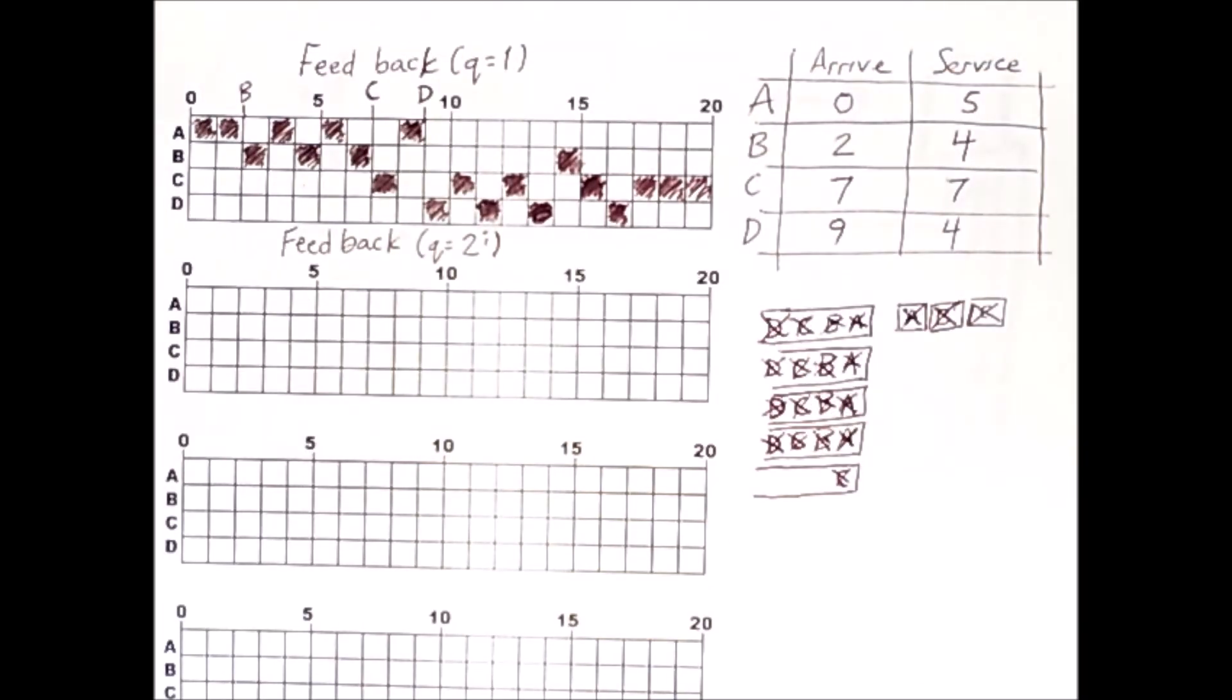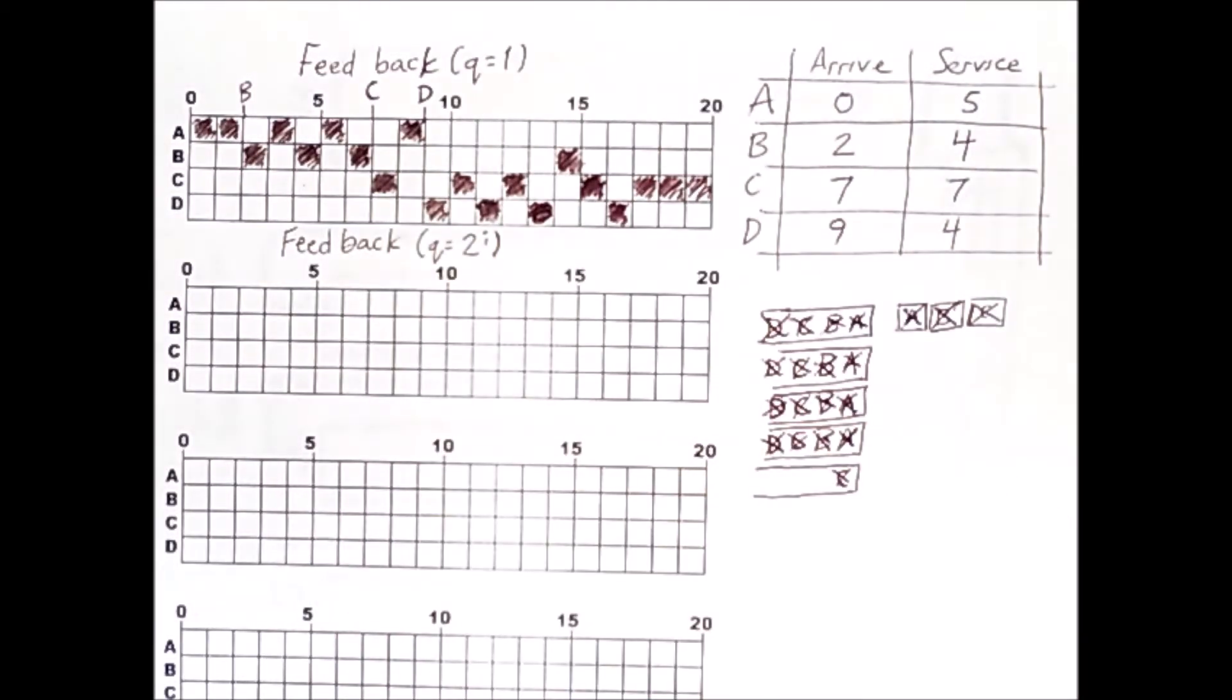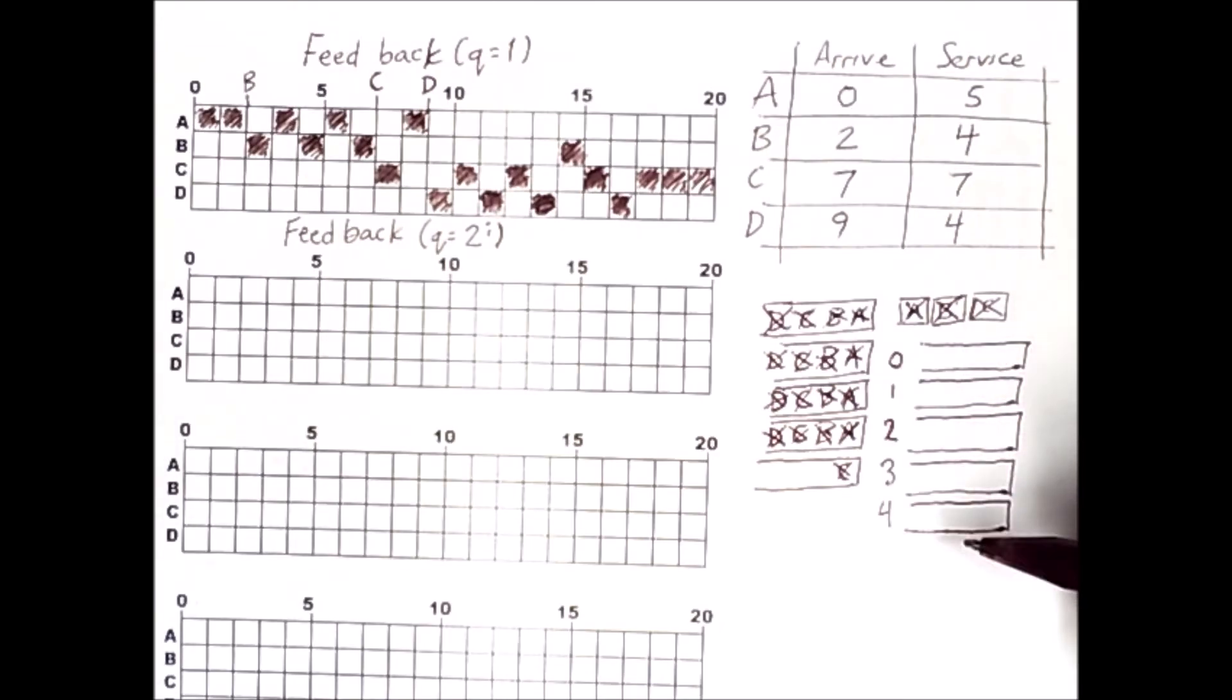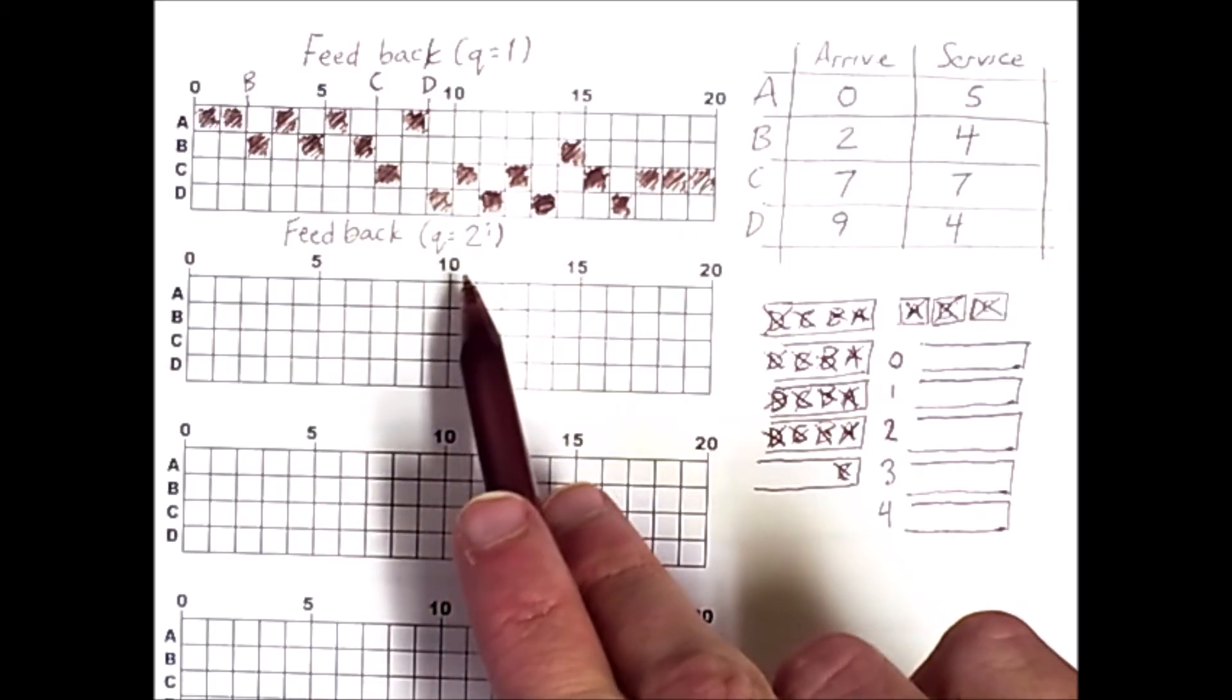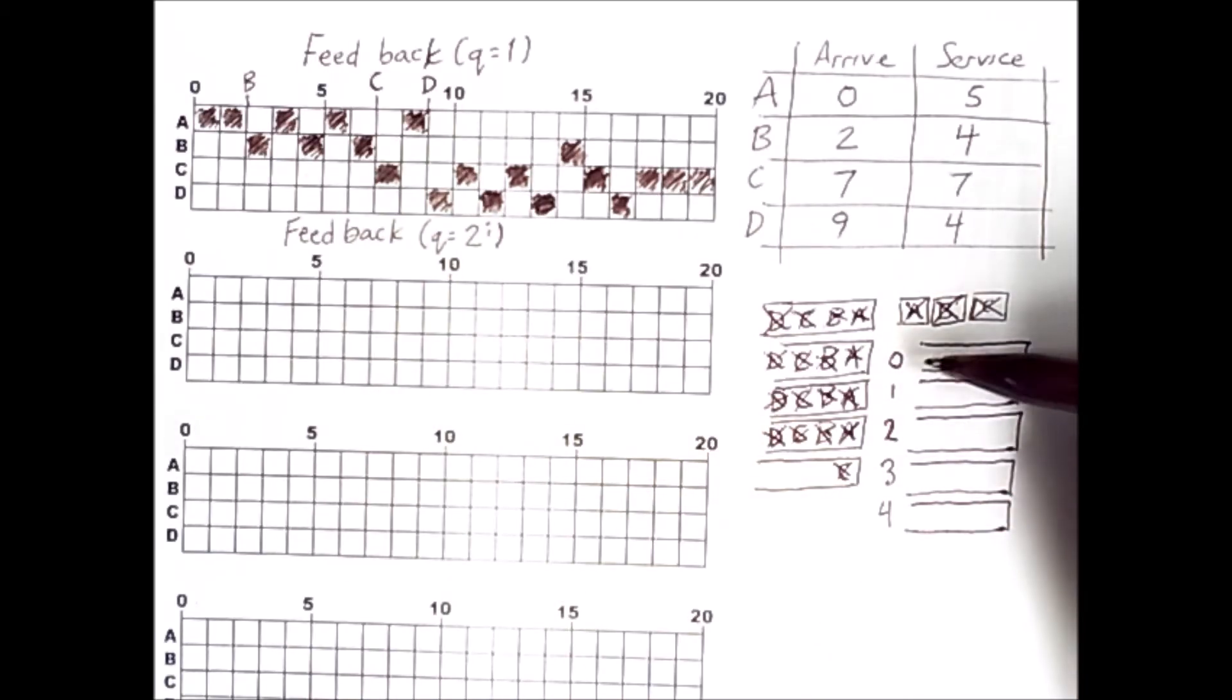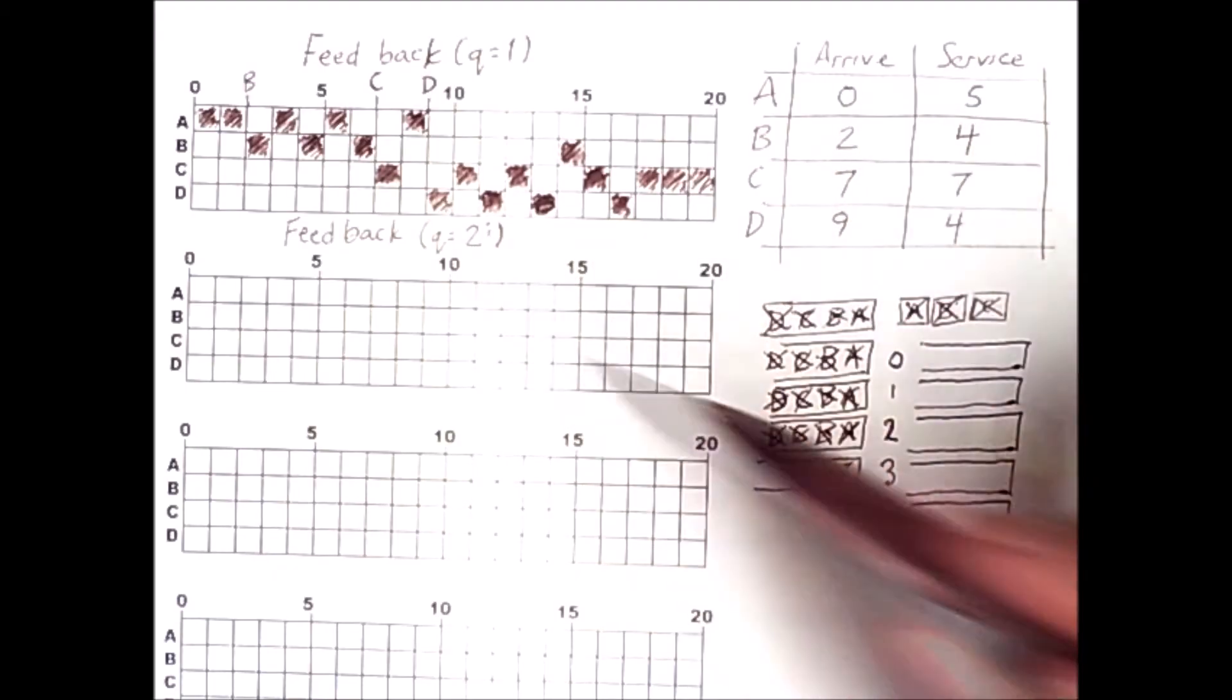Now, you could do the same thing with a quantum of 2 or more. Just keep in mind that it's fixed. Now, this is in contrast to feedback with a quantum of 2 to the i, where the amount of time you get to run depends on which queue you're coming from. So that looks like this. On the side here, I've laid out all of the ready queues for doing feedback with queue 2 to the i in advance. So these numbers are the values of i depicted in that quantum measure.